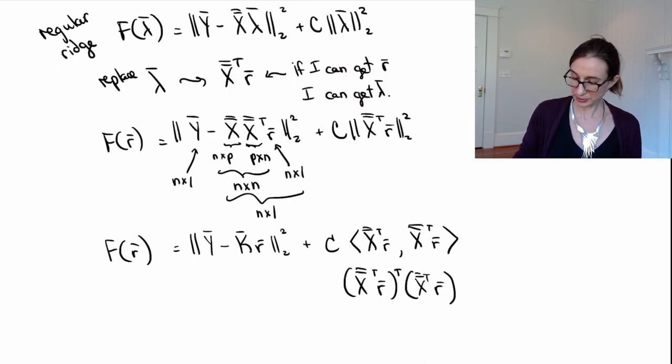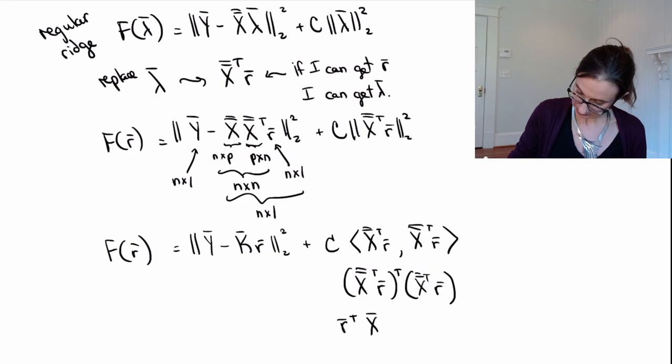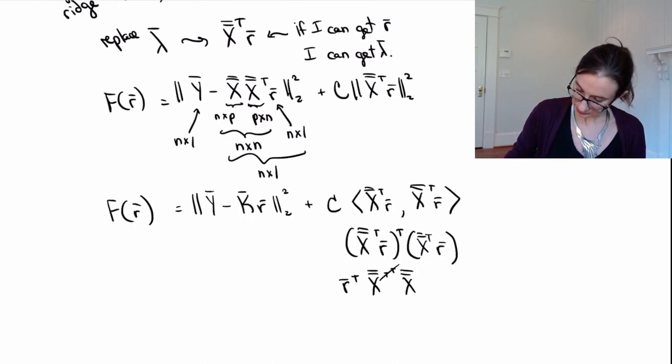Okay, so now the transpose of a product is the product of the transpose. So let's just write this out. So this is actually r transpose times X, transpose, transpose. Transpose, transpose. Cross those out. All right. So then this is times X transpose r.